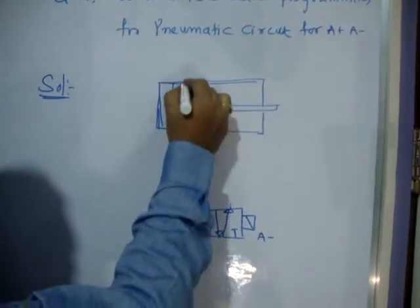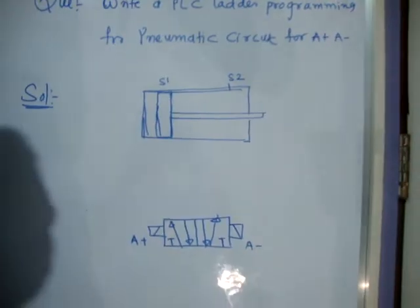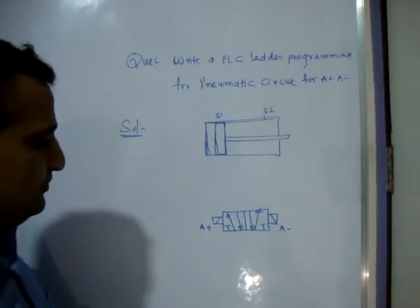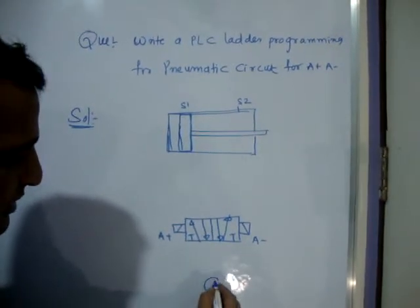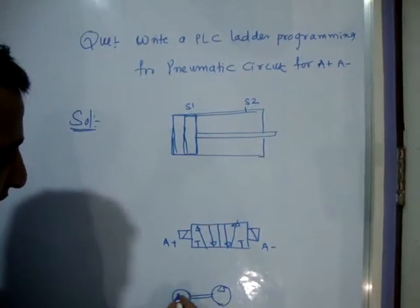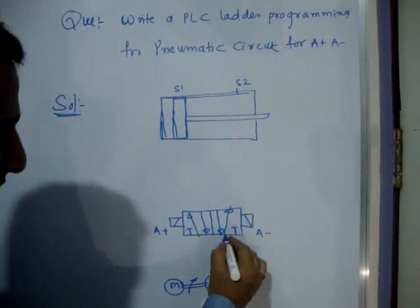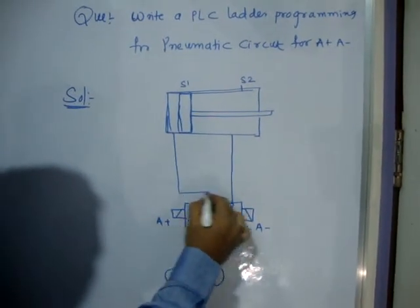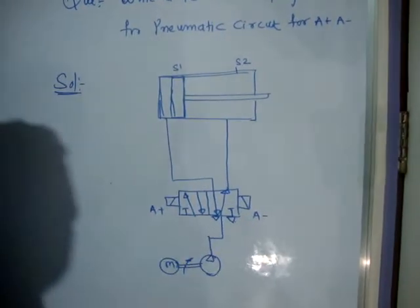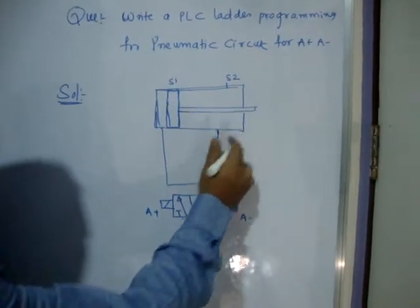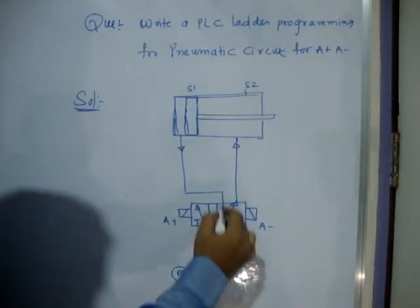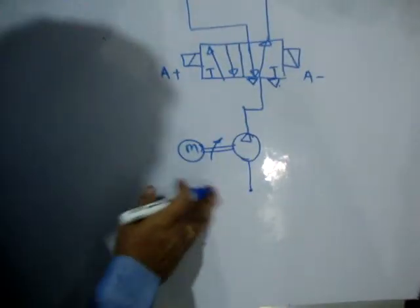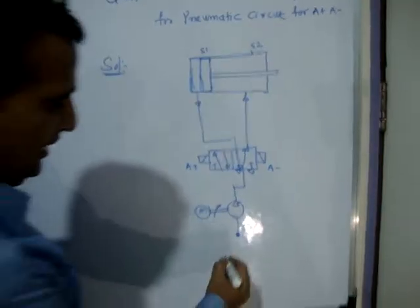There are two sensors — I am using magnetic sensors because the piston is also magnetic, so a proximity sensor, reed switch, or magnetic sensor can be used. For this I need a compressor — this is the symbol of the compressor. A motor drives the compressor. I am attaching it to the second position so the piston will retract. There are two mufflers on the outputs. Presently air moves in this direction and exits to the atmosphere. An FRL unit is also required.